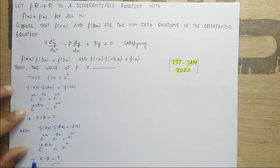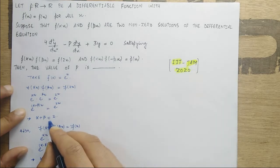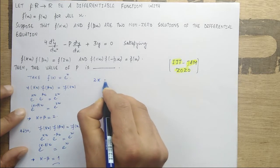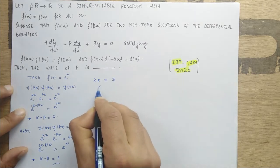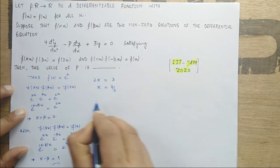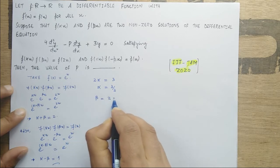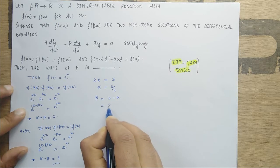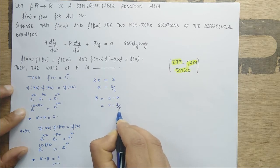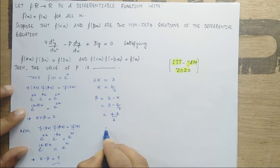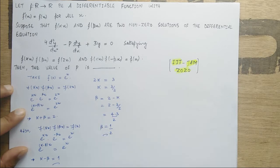Now we have α + β = 2 and α - β = 1. Adding these two equations gives 2α = 3, so α = 3/2. Then β = 2 - α = 2 - 3/2 = 4/2 - 3/2 = 1/2. So β = 1/2.